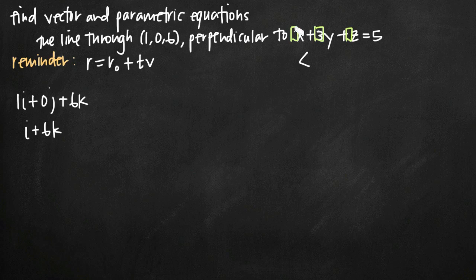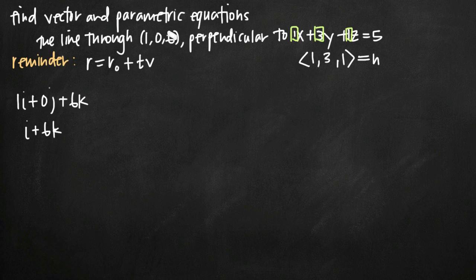Taking the coefficients — this is essentially 1x and 1z — the normal vector is (1, 3, 1). Because the normal vector is perpendicular to the plane, and we're looking for a line which is also perpendicular to the plane, we know that our line is going to be parallel to the normal vector. So instead of finding a line perpendicular to a plane, we can think of this as finding the line through a point parallel to that vector.